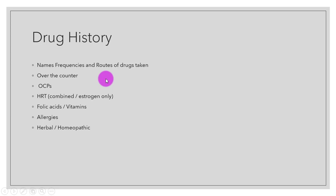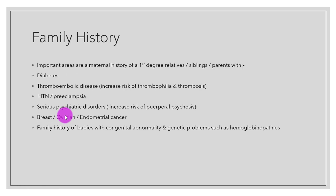In the drug history, we ask about the names, frequencies, and routes of drugs taken, whether they were over-the-counter pills, contraceptive pills, hormone replacement therapy, folic acid, vitamins, drugs taken due to allergies, or herbal and homeopathic medicines.